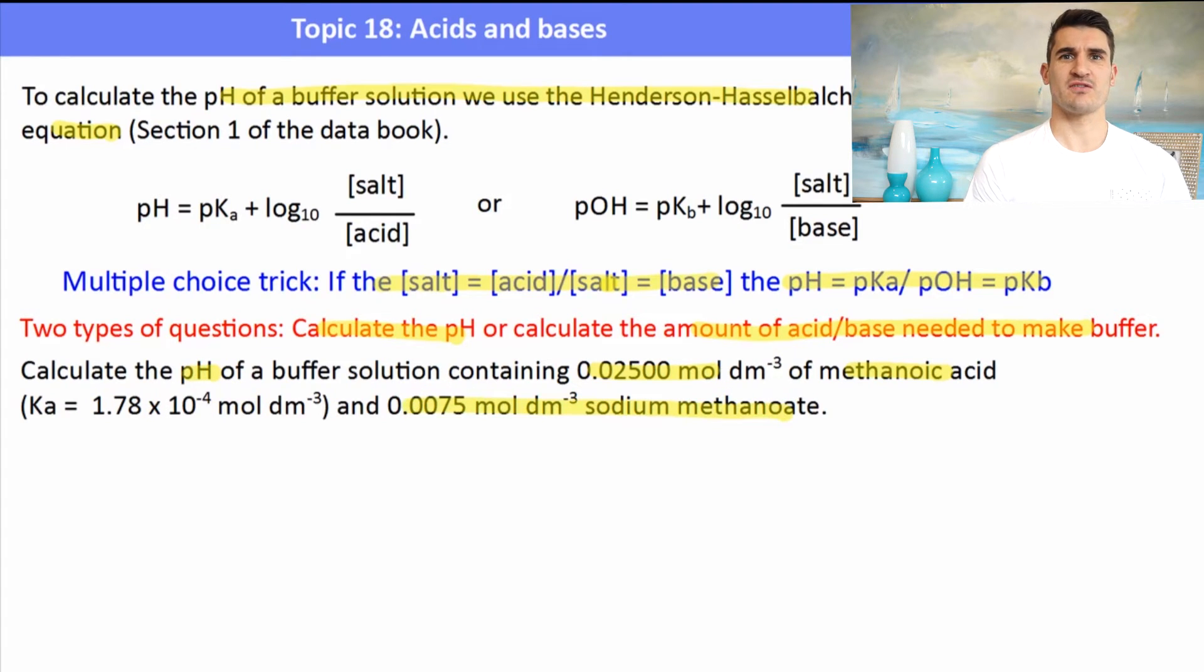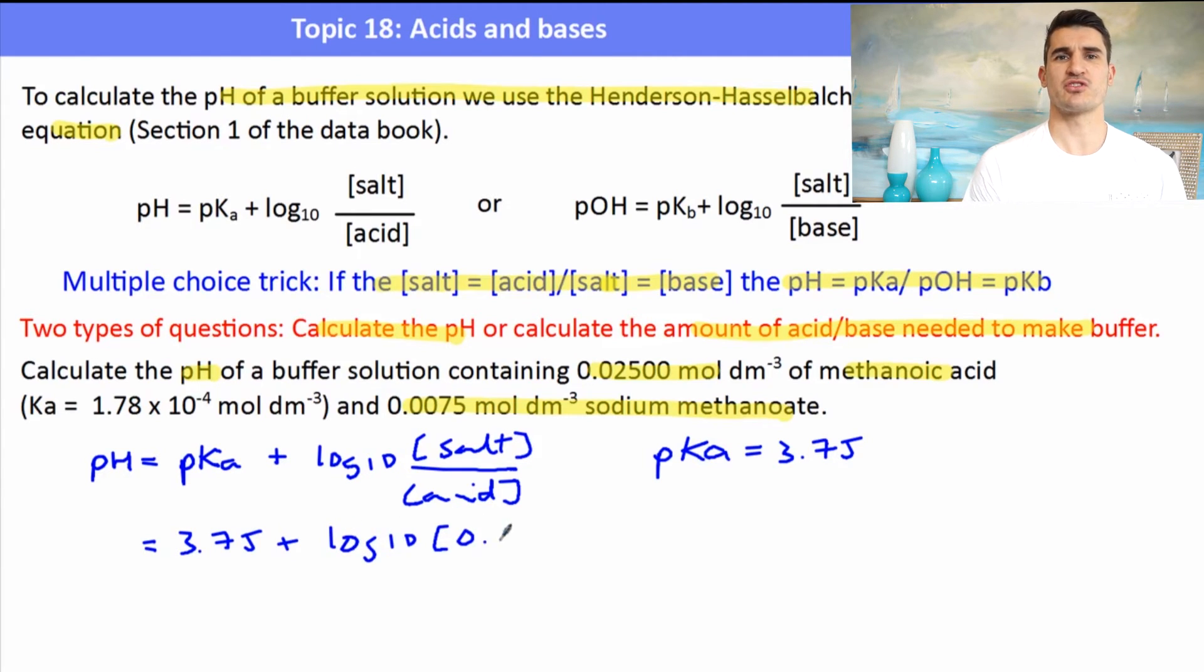If we're asked to calculate the pH of a buffer solution we're usually given the concentration of the acid and the concentration of the salt. So we just need to determine what kind of buffer solution it is. Here we have methanoic acid so it's an acidic buffer solution. So we can rewrite the equation and then substitute in some of our values. We were given the Ka value of methanoic acid so we'd need to find the pKa by doing negative log of base 10 of the Ka. Once we find the pKa we subbed that into the question, we've also got the concentration of the salt which was given and the concentration of the acid. So we're able to calculate the pH of this buffer just by subbing in a few numbers. This is probably the easiest case of a calculation of a pH that you'll get.